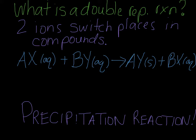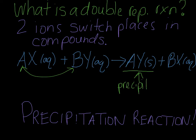For example, we have Ax plus By, and A and B are basically just going to swap places. When this happens, you form Ay plus Bx. The reason that this happens is that you're going to form a solid product. This has a special name that you need to know, and it's called a precipitate. A precipitate is a solid that forms after you've mixed two solutions.